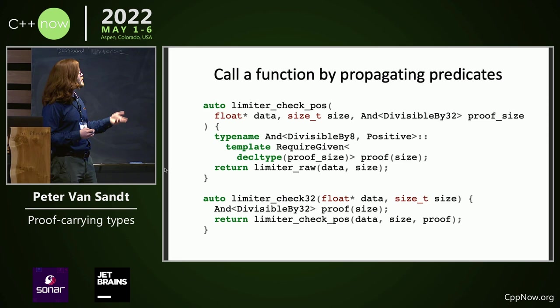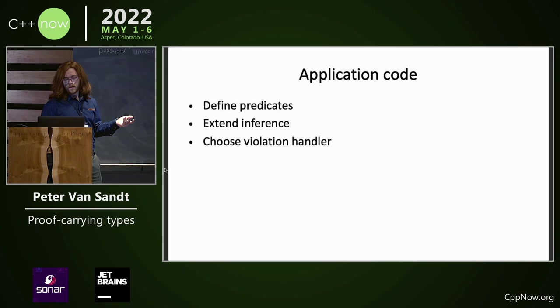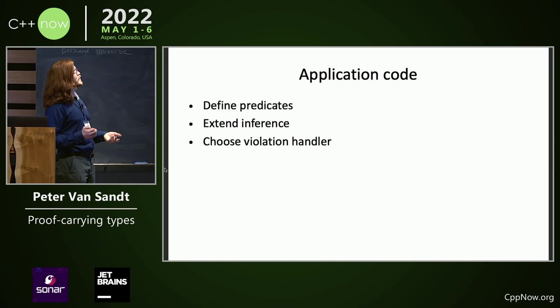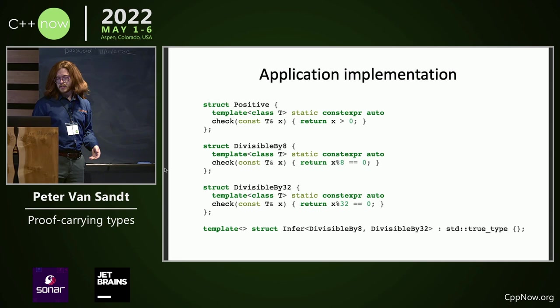From application code, what we want to do is define predicates, extend inference, and choose violation handlers. We demonstrate here how to define a predicate — you write a check. We demonstrate how to add additional inference — you write a specialization. You can see other talks for examples of integrating contract checking with values.